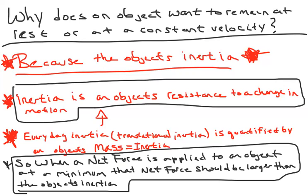When an object speeds up, slows down, or changes direction, it requires some effort — that effort is overcoming inertia.